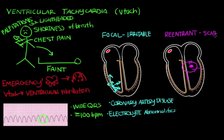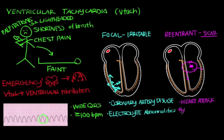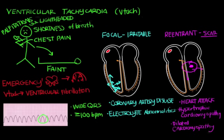For re-entrant VTAC, scar tissue formation is the key risk. The classic example is a heart attack: part of the heart is deprived of oxygen-rich blood, that tissue dies, leaving a scar that sets the stage for re-entrant circuits, since the scar disrupts smooth electrical conduction. Other conditions associated with scar tissue formation include hypertrophic cardiomyopathy, which makes the heart muscles too big, and dilated cardiomyopathy, which makes the heart walls blow out like a balloon. Like a heart attack, these diseases also promote scar tissue and re-entrant circuits.